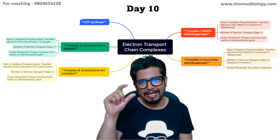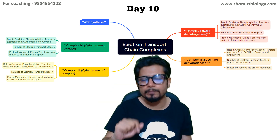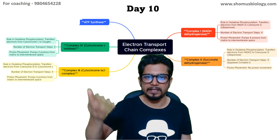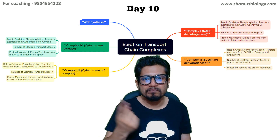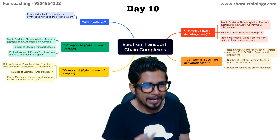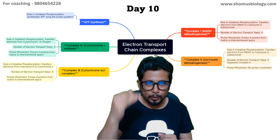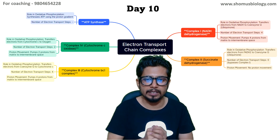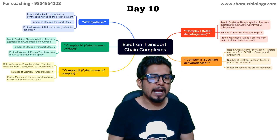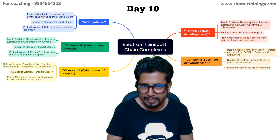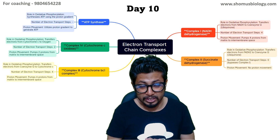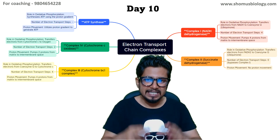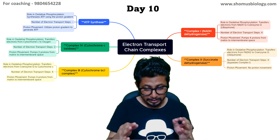These ten protons residing in the intermembrane space are then transported back into the matrix through the ATP synthase enzyme, which acts as a molecular turbine utilizing the proton motive force of the proton gradient. Multiple steps are involved, and this proton movement drives the generation of ATP in the matrix of the mitochondria. This is how the electron transport chain produces ATP via ATP synthase.